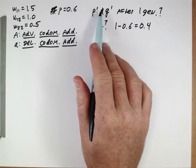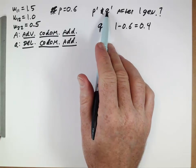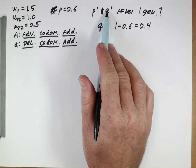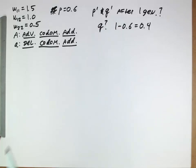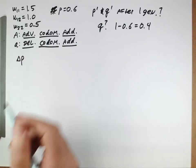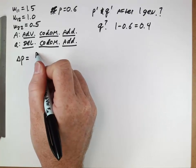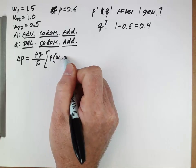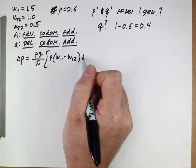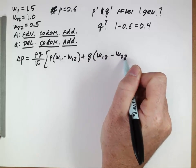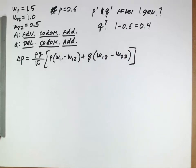So now to figure out the new frequency of p and the new frequency of q, or the new value of p that represents the frequency of the capital A allele, the new value of q which represents the frequency of the lowercase allele, so we need to use our equation from before in order to figure out what is the change in the value of p.